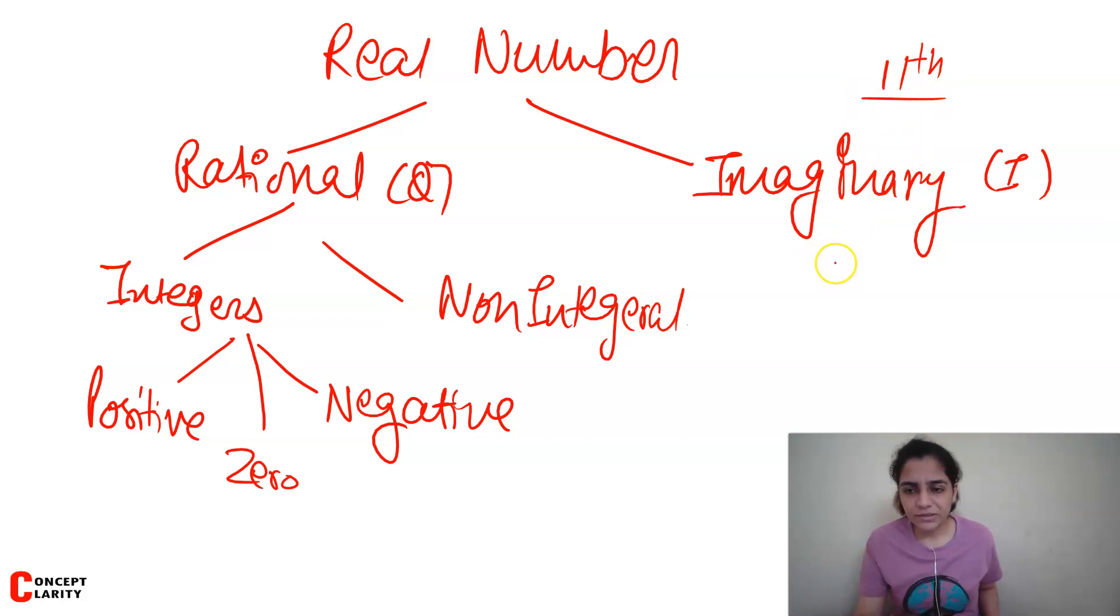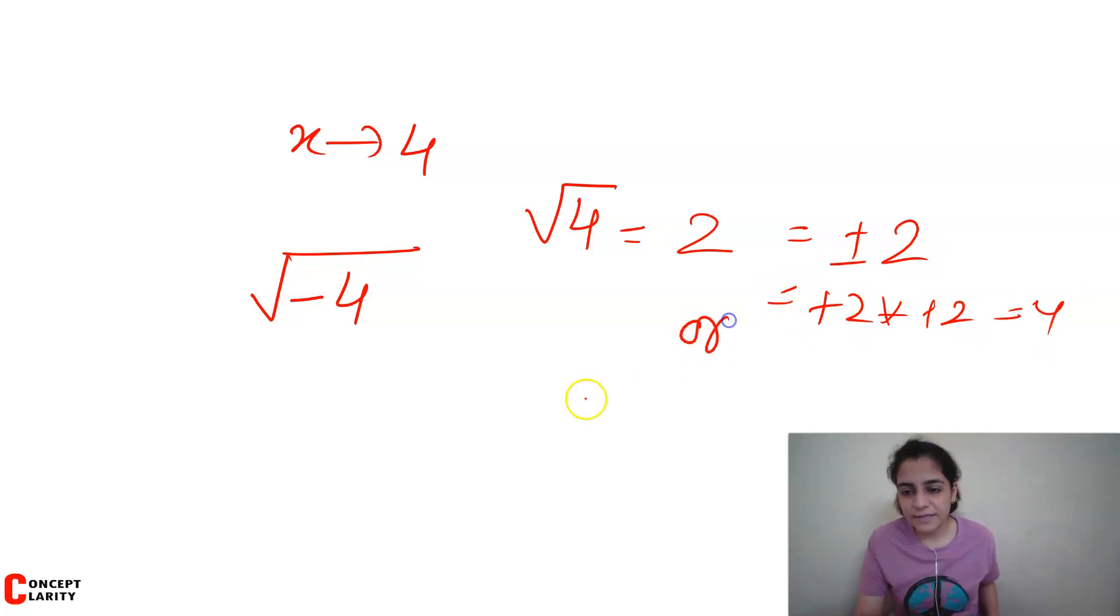For example, if we have x equals 4, when we take 4 under root it is 2. But when we take minus 4 under root, this is not possible. Because 4 we can say could be plus 2 or minus 2 - plus 2 into plus 2 gives you 4, whereas minus 2 into minus 2 can also give you 4. So 4 square root is very easy.